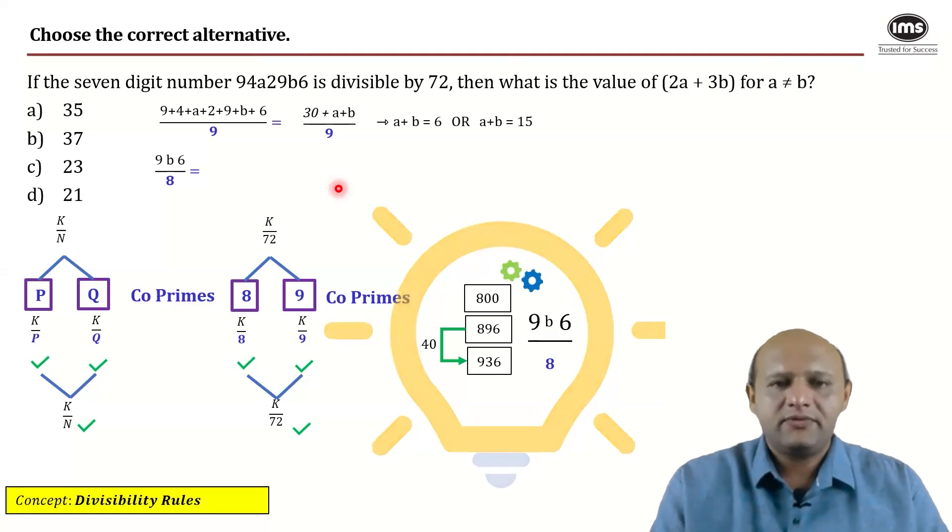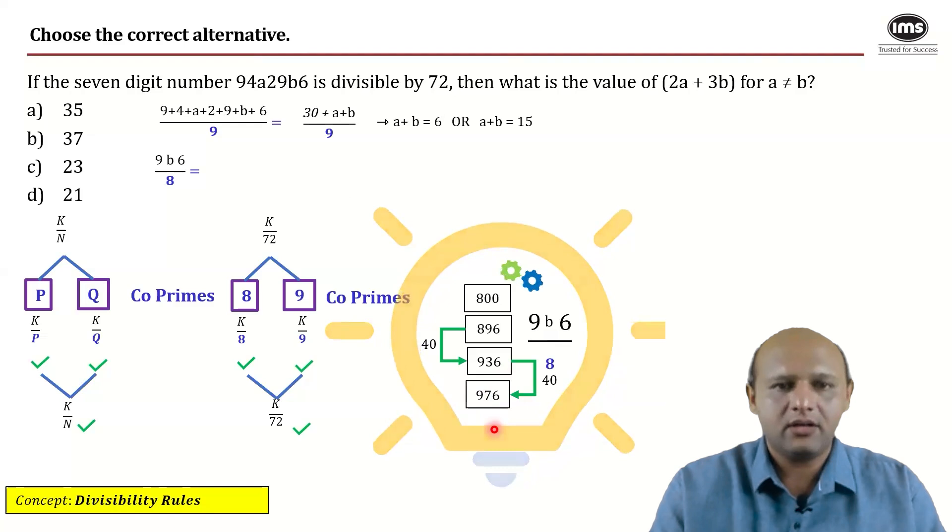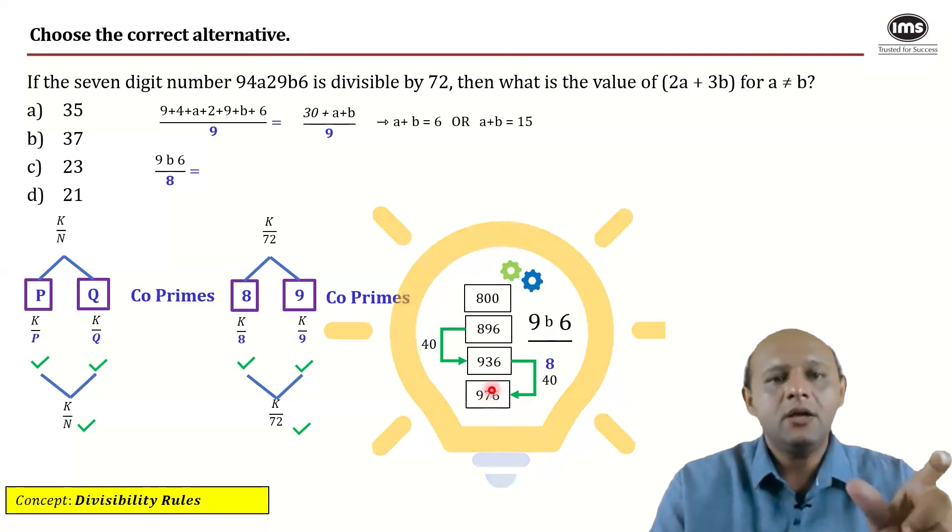Is there any other number possible? Yes. So if you add another 40 to 936, you get 976. Can we move beyond 976? No, because you can add 40, but then you will attain a number which is greater than 1000. So that does not fall under the purview of the numbers that we require. So what are the possible values of B? Three and seven, three or seven.